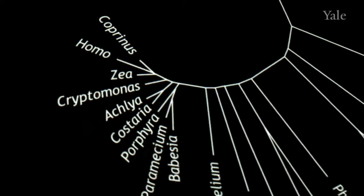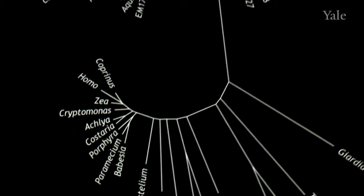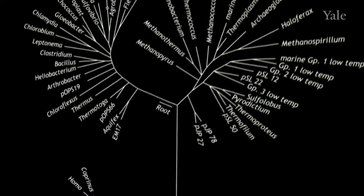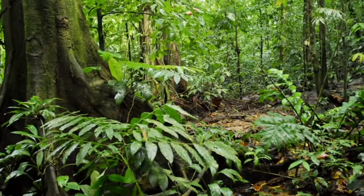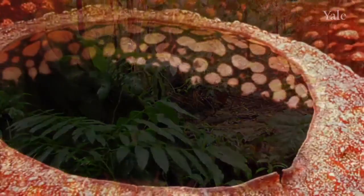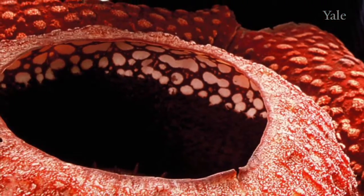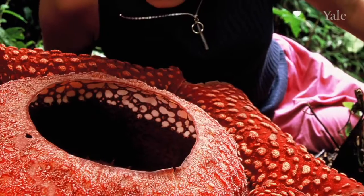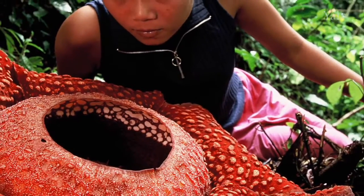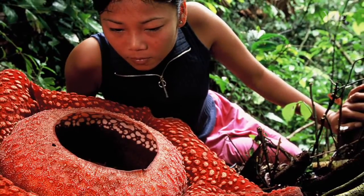Many surprises have emerged from the phylogenetic analysis of molecular information. One of the most unexpected recent findings concerns an unusual parasitic flowering plant called rafflesia. They're found in Southeast Asia, and they produce the world's largest flowers. The biggest of them is like three feet in diameter, weighs more than 20 pounds, and looks and smells like rotting flesh.